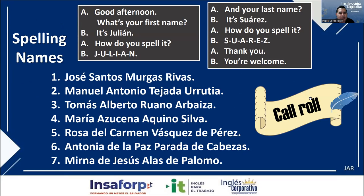Spelling names. Good afternoon. What's your first name? It's Julian. How do you spell it? J-U-L-I-A-N. And your last name? It's Suarez. My name's Julian Suarez. How do you spell Suarez? S-U-A-R-E-Z. Thank you. You're welcome.